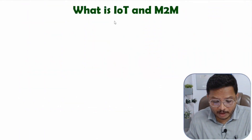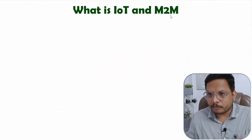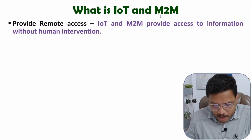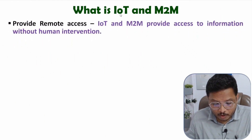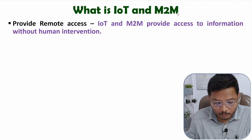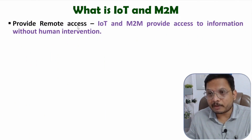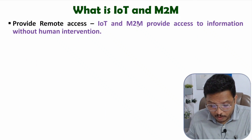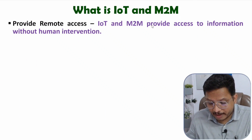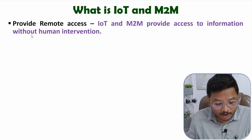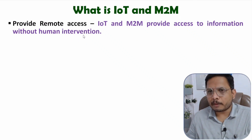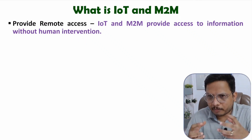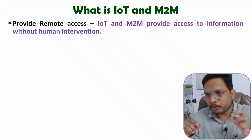What are the meanings of IoT and M2M networks? To understand this, first I will discuss the general idea of what IoT and M2M networks are. Both provide remote access between devices, so both IoT and M2M provide access to information without human intervention. In both cases, whether it's IoT or M2M, devices will share information with each other.